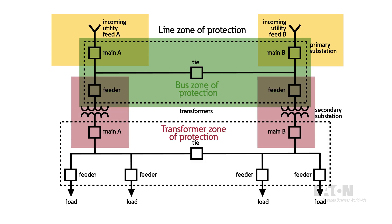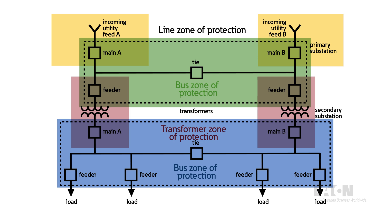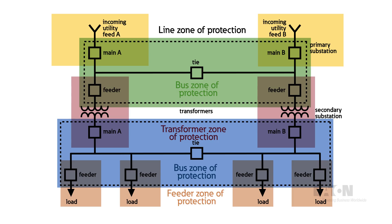Next downstream is the transformer zone of protection, which uses a transformer protection relay and includes the associated primary substation feeder breaker, transformer, and secondary substation main breaker. This zone of protection would use a transformer differential relay, 87T. The secondary substation main and feeder circuit breakers are then protected by a bus zone of protection, similar to the primary substation. Finally, the feeder breakers and loads are protected by individual feeder zones of protection using feeder protection relays. Each feeder protection relay includes instantaneous and time delay overcurrent, and may include additional functions like overvoltage, undervoltage, and others.